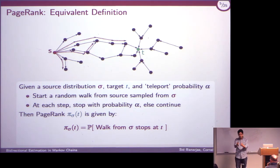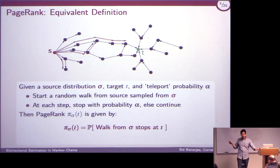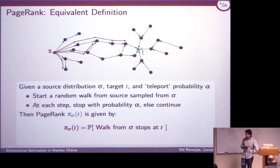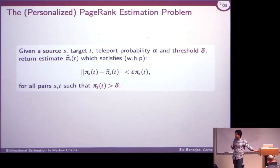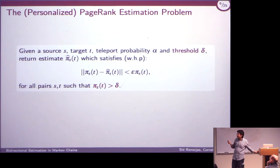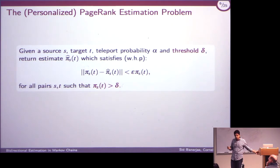Thinking about personalized PageRank from node S: PageRank is the same as doing short random walks around me in the network and seeing where I end up. Short meaning geometric alpha. It really is an egocentric view of the network. If I do short walks, where do I end up most of the time? Those are the most important nodes as far as I'm concerned. The parametrized estimation problem: given the true PageRank π_S(t), give me an estimate that is within an epsilon factor of the true value, as long as the true value is greater than delta.